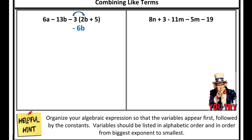Negative 3 times 2b is negative 6b. Negative 3 times positive 5 is negative 15. I'm going to bring everything else straight down. Now I need to categorize my like terms. I see a set of a — I'm going to underline it once. There are no other a's, so I don't need to combine my sets of a.